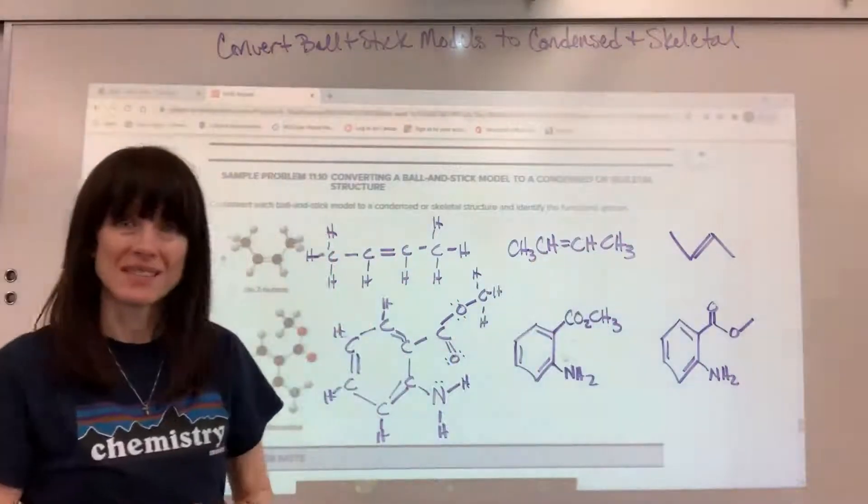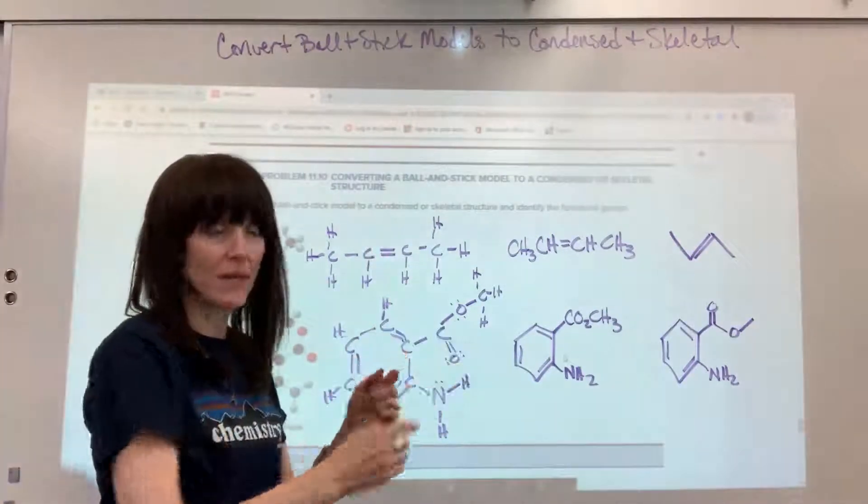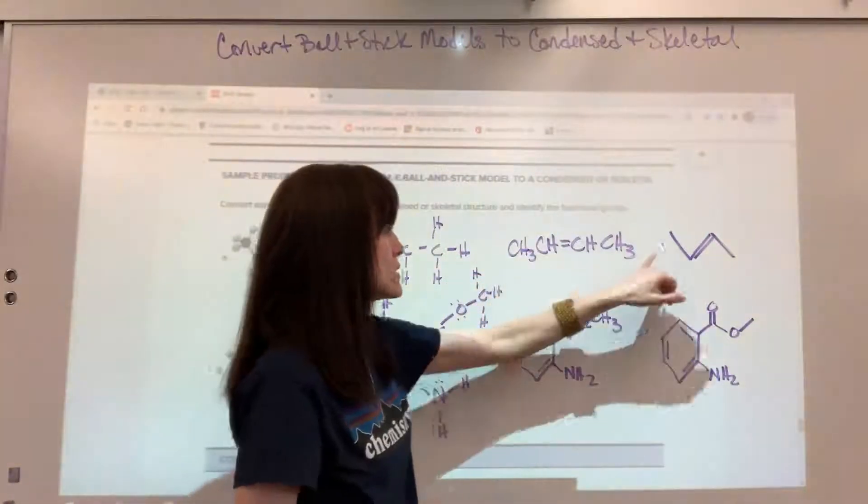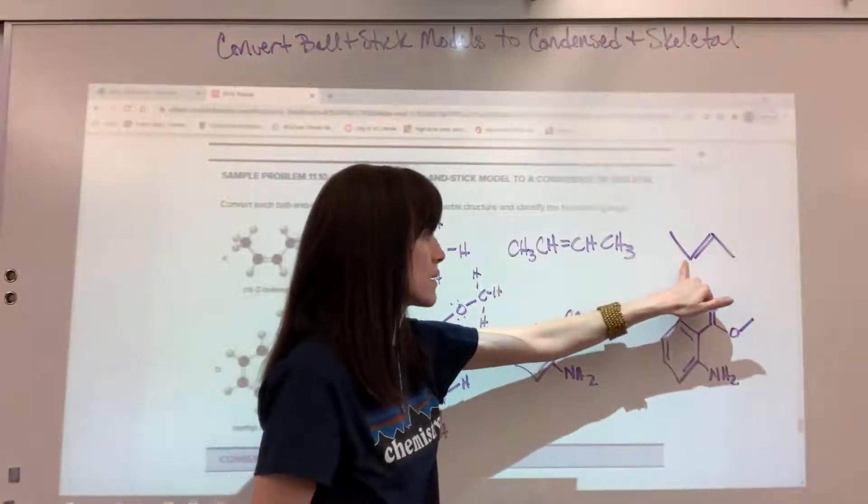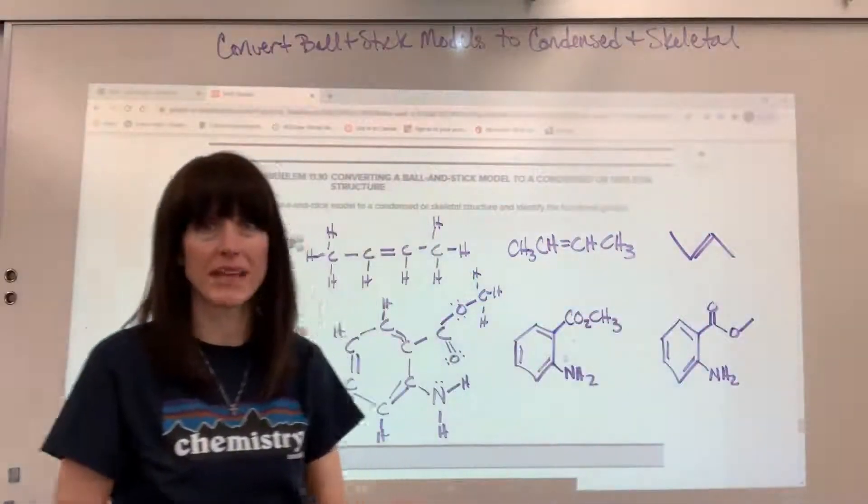To do our skeleton, remember we make a vertice, we make this conjunction between the carbons. So I'm going to have my first carbon, second carbon, contains a double bond, there's my third carbon, and then the fourth carbon on the end.